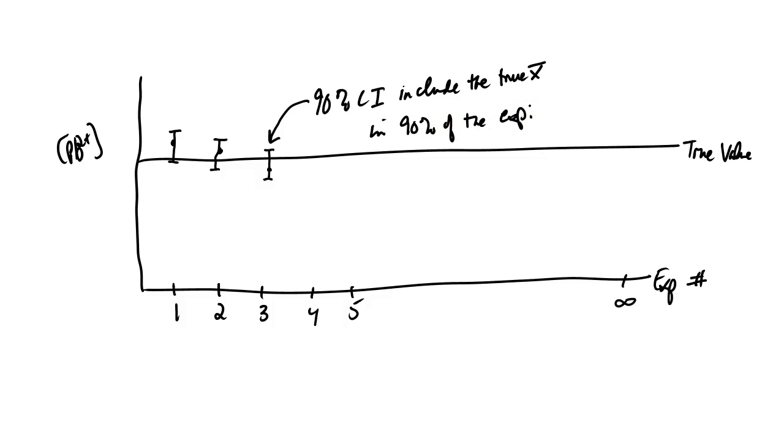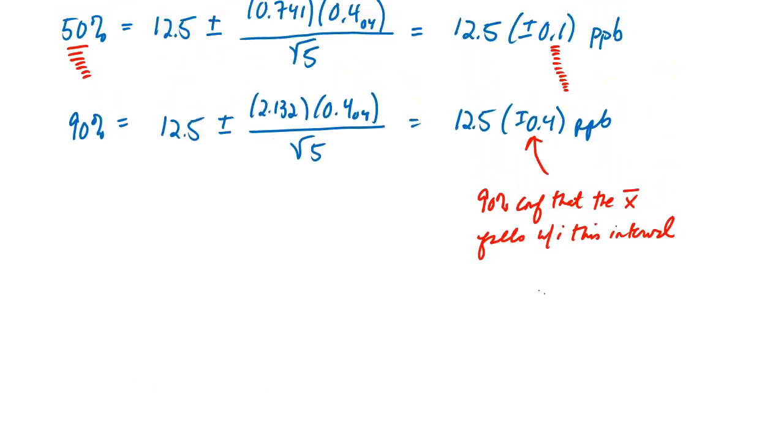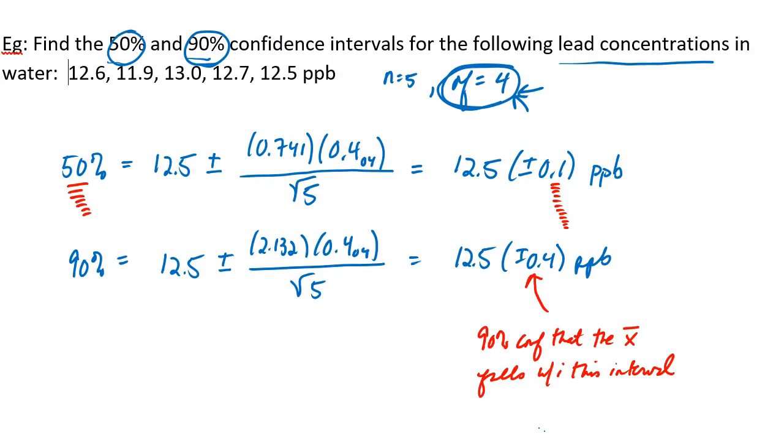So I know that's a little bit confusing, and that's often why, somewhat incorrectly, we say, like we said up here, we can be 90% confident that the true mean falls within these intervals.